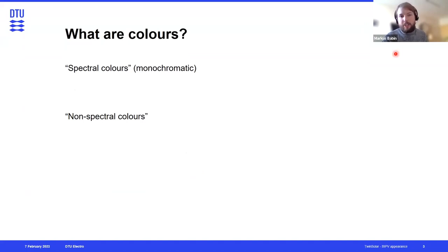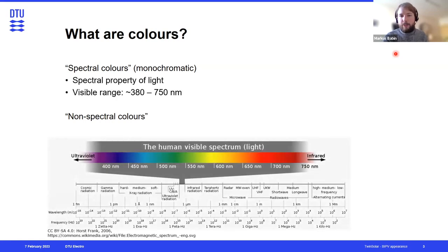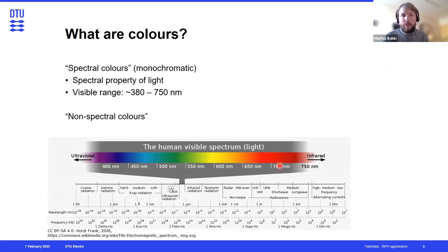What are colors? Basically, there are two main groups of colors: spectral colors — monochromatic colors — which arise from the visible spectrum of light. If we look at the visible spectrum from 380 to 750 nanometers, we can see that each wavelength corresponds to a certain color.